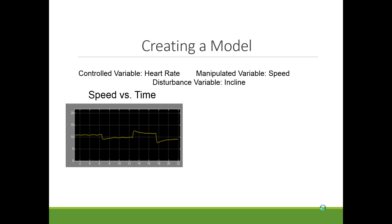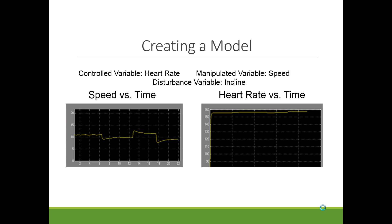With the model, we applied four different grade changes over time and generated a speed-versus-time profile that Tyler should run to maintain a constant heart rate of 160 beats per minute. According to the model, he would maintain between 155 and 160 beats per minute if he ran at that speed profile given those varying inclines.